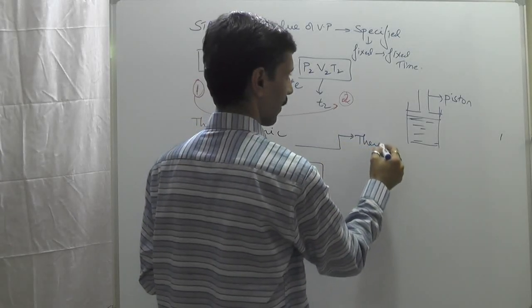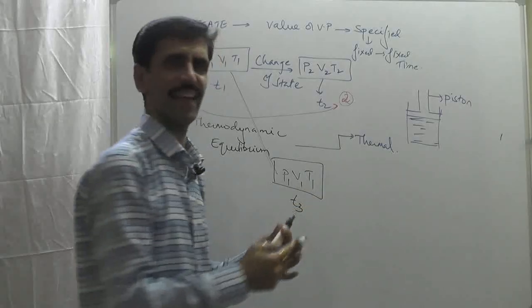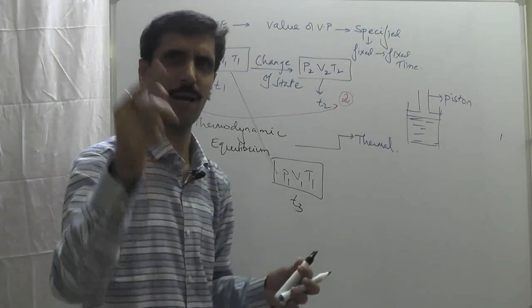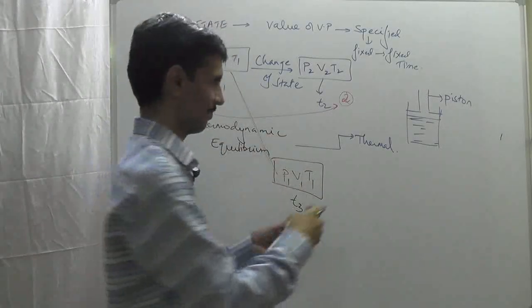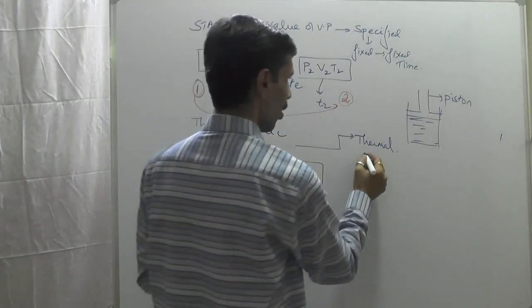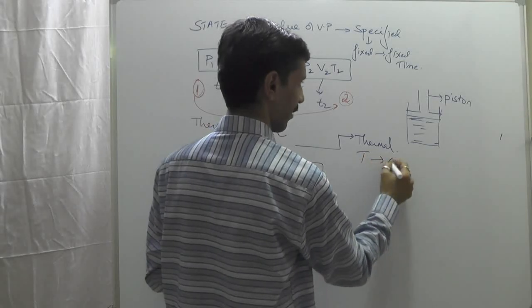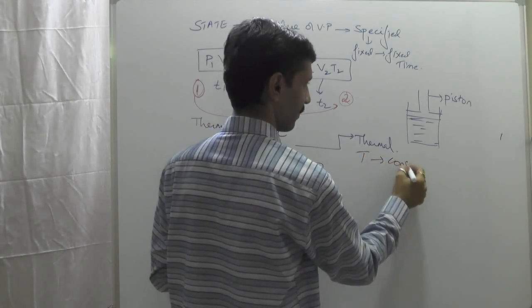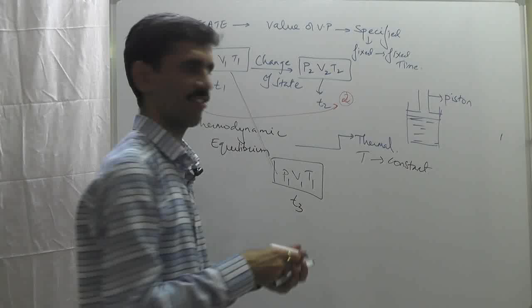Number one is thermal equilibrium. From the name you can understand: it involves temperature. So here, temperature is constant.